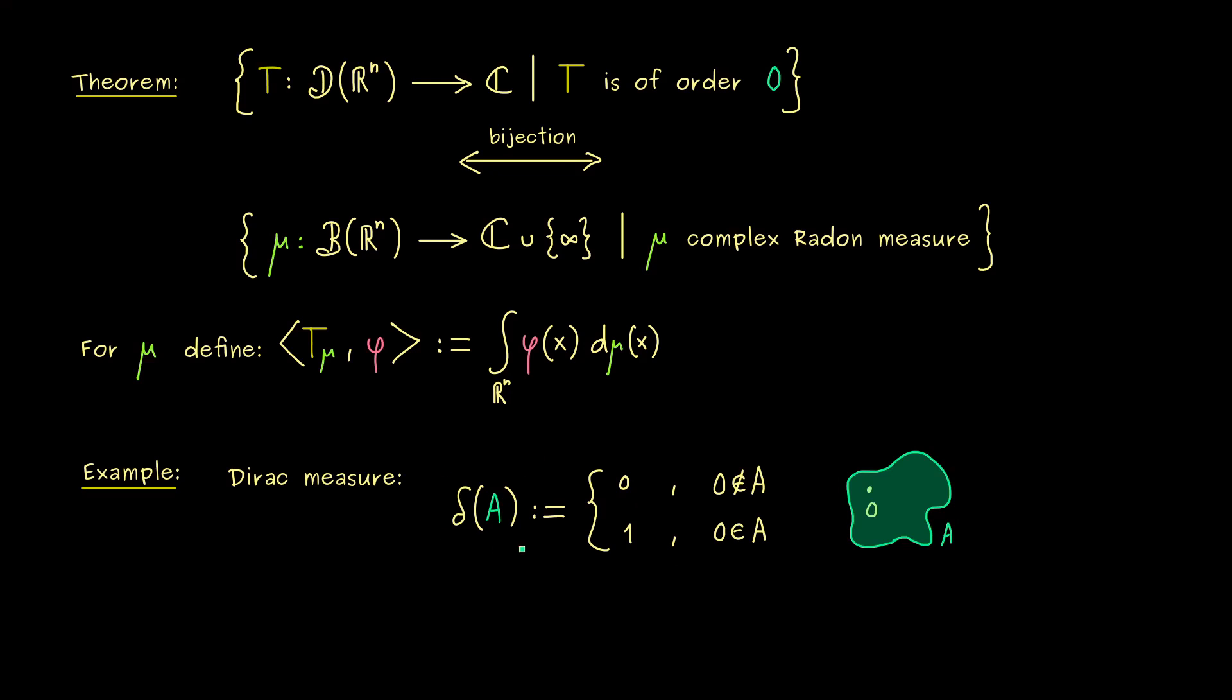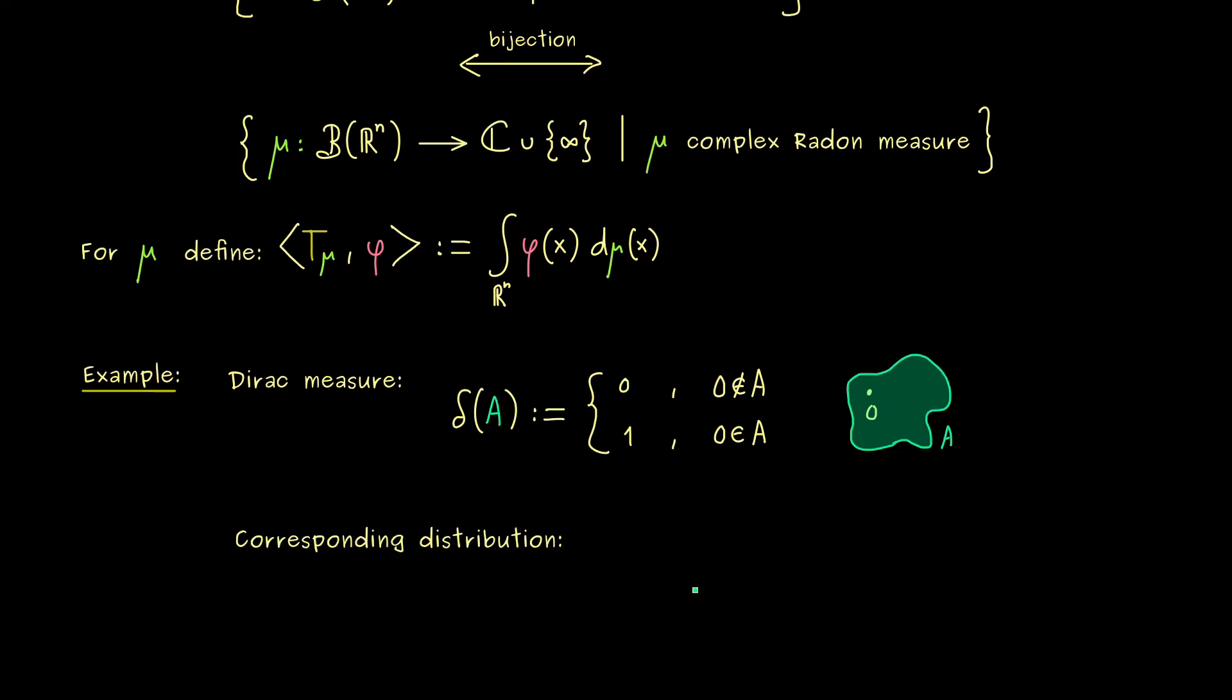So the interpretation here is simply that the whole mass, the whole charge we have, lies just in one point. Therefore, the Dirac measure can describe a point charge. However, this is a concept we already know. This is something distributions should do. Therefore, let's check what the corresponding distribution T_δ is. So by using the definition from above, we have this integral with respect to the Dirac measure. However, this means we only get the value at the origin out, hence φ(0).